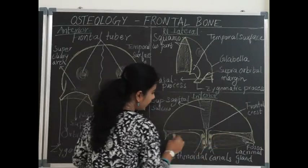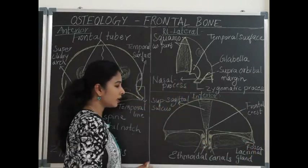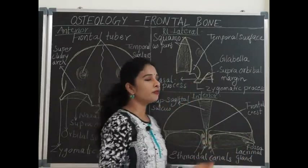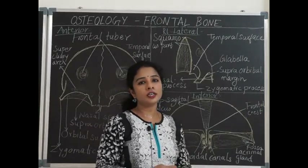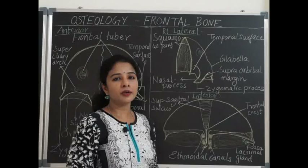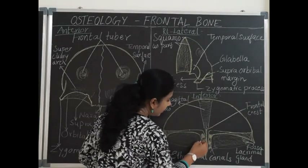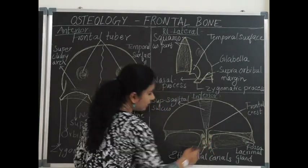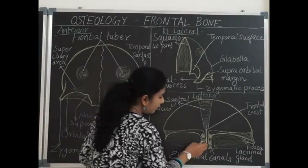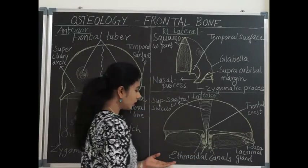On either side laterally, we can see the orbital part of the frontal bone, which has superior and inferior surfaces. The superior surface forms the floor of the anterior cranial fossa and is related to the frontal lobe of the brain along with the meninges. The inferior surface of the orbital plate forms the major part of the roof of the orbit. In the midline, there is a U-shaped notch called the ethmoidal notch, where the ethmoidal bone articulates.